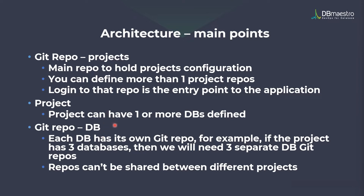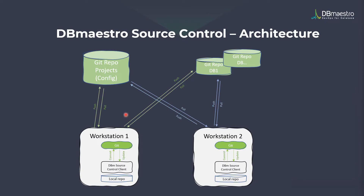Let's look at the architecture diagram so that the points I shared are more clear. As mentioned, you have the git repo projects that stores all the project configurations and user configurations — in this case, workstation 1 and workstation 2. You have separate git repos for each database in your project, and each workstation will have local repositories and a DBM source control client, which will perform commits and updates to the repositories whenever needed.